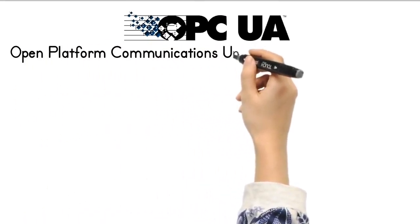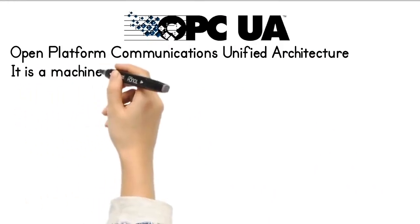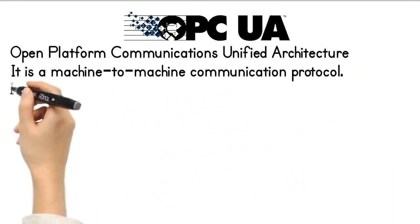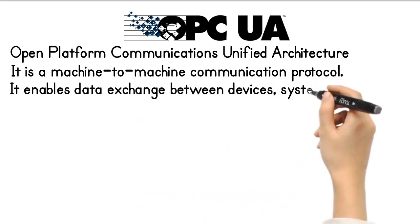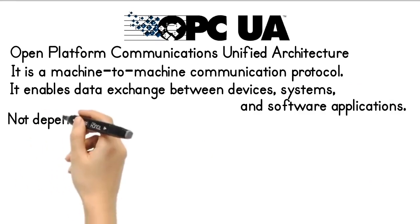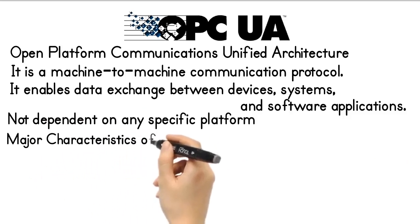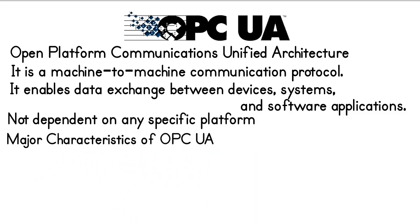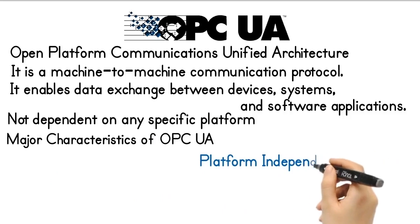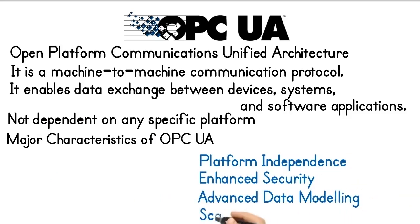OPC UA Protocol. OPC UA stands for Open Platform Communications Unified Architecture. It is a machine-to-machine communication protocol that enables data exchange between devices, systems, and software applications. OPC UA is not dependent on any specific platform. Major characteristics of OPC UA are Platform Independence, Enhanced Security, Advanced Data Modeling, and Scalability.